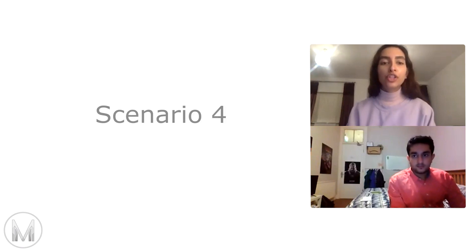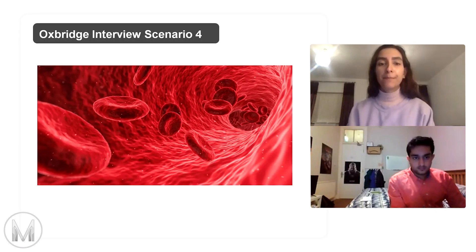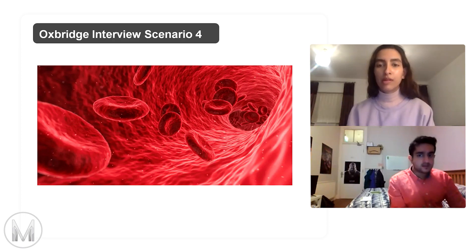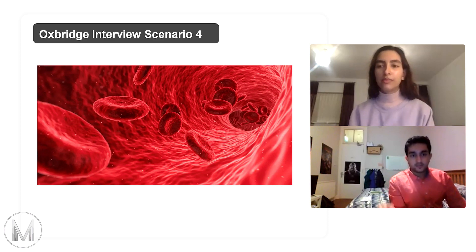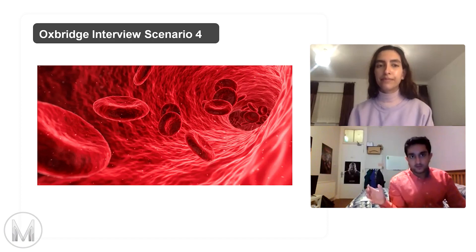We're on to scenario four now: bodily fluid. How could you measure the volume of blood in the body? I guess you could do it by measuring how long it takes for something to pass through the body, and if you know how much is filtered by the kidney in a particular amount of time, measuring how long it takes for the concentration of a specific substance to decrease by a certain amount — doing that will tell you how much it's been dissolved in.